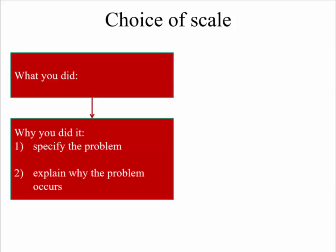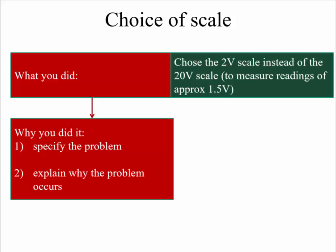And the last idea that I have here, the last of the five, is the choice of scale. So if you're measuring, say, a voltage which is about one volt, you'd like to go and choose a voltmeter that goes between 0 and 2 volts rather than one that goes between 0 and 20 volts. So that's what I've written there. And why do we do that?